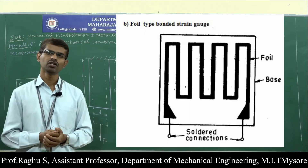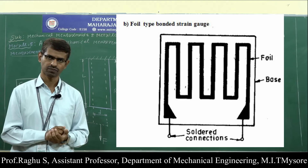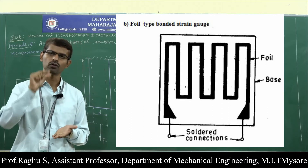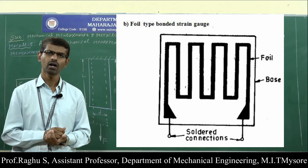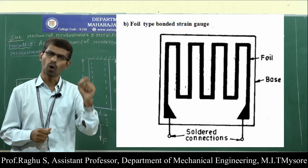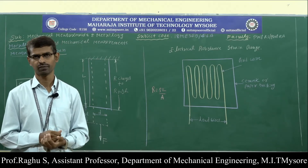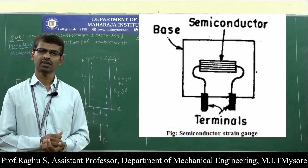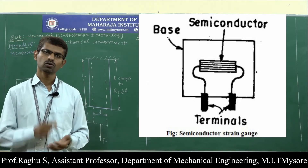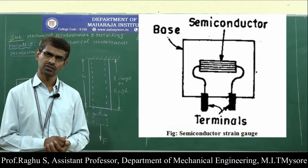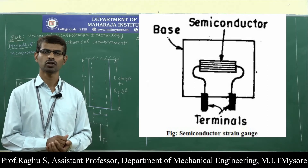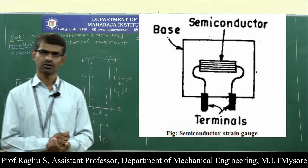The foil type strain gauge has a metal foil arranged in a zigzag manner, supported by backing material which may be thin paper or plastic. The assembled strain gauge is bonded or pasted to the structure whose strain has to be measured. The semiconductor strain gauge consists of a rectangular filament made from semiconductor material, supported by stainless steel or plastic backing material. Leads are provided for electrically connecting the strain gauge to the Wheatstone bridge.